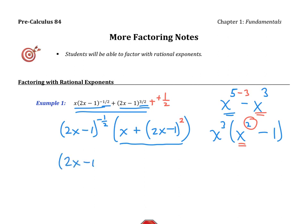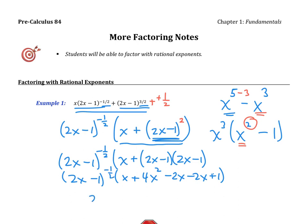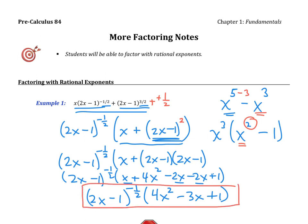So we've got our GCF of 2x minus 1 to the negative 1 half power. And then in our parentheses, we've got an x, and we should probably foil this out. If you need to, remember you can write it twice if it helps. And so now we've got an x plus 4x squared minus 2x minus 2x plus 1. And then we still have our GCF to the negative 1 half power. And then when we're done, we've got 2x minus 1 to the negative 1 half power. And then in the second parentheses, it looks like we have a 4x squared. It looks like we have minus 3x when we combine all of our x's together, and then plus 1. And that's our overall answer.